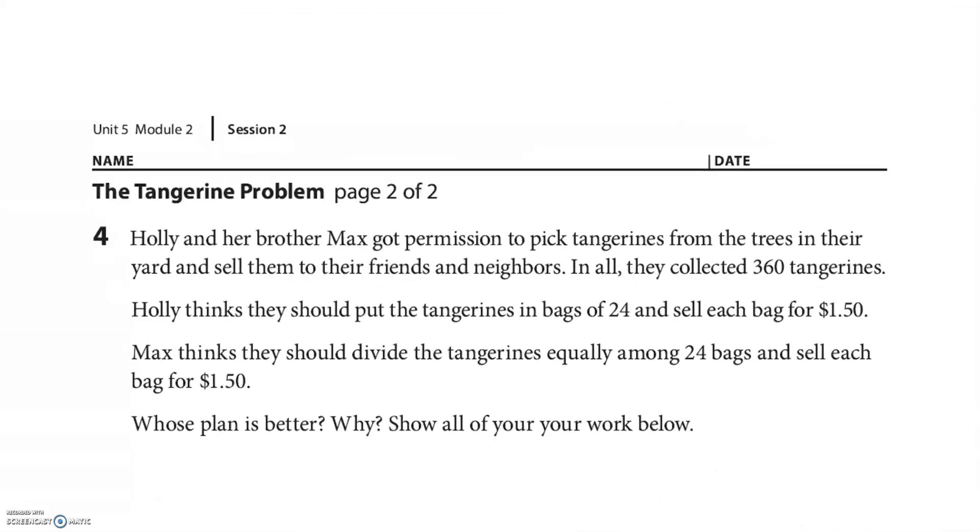All right, Holly and her brother Max got permission to pick tangerines from the trees in their yard and sell them to their friends and neighbors. In all they collected 360 tangerines. Holly thinks they should put the tangerines in bags of 24 and sell each bag for $1.50. Max thinks they should divide the tangerines equally among 24 bags and sell each bag for $1.50. Whose plan is better? This is kind of interesting. Let's just look at Holly first.